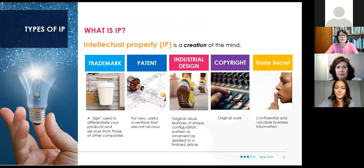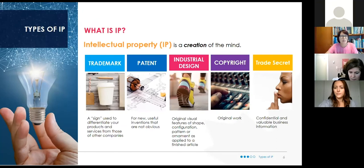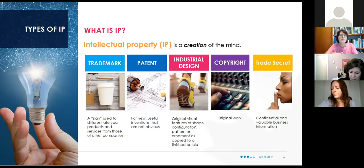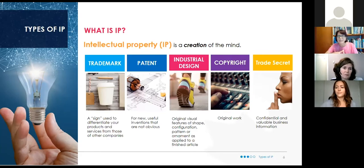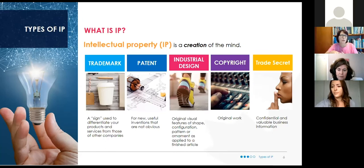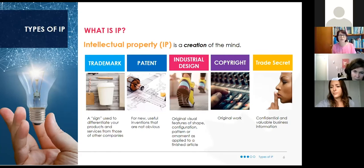I like to think of intellectual property as a toolbox. Just as you'd need different tools to build a house, you need different tools to protect what you have in a business. There are five main tools in our intellectual property toolkit. Some you may have heard of, and some you may be less familiar with. A lot of times people think of intellectual property as just patents, but patenting is only one of our tools.